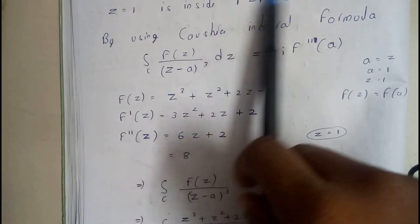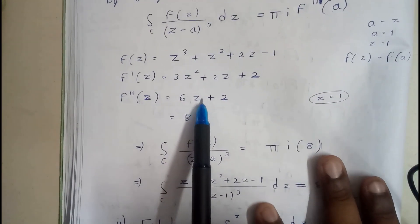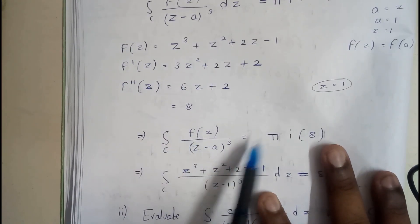So basically the value of z equals 1 from the singular point, so I substituted this value of z = 1, so I got 8. So integral over C of f(z)/(z-a)³